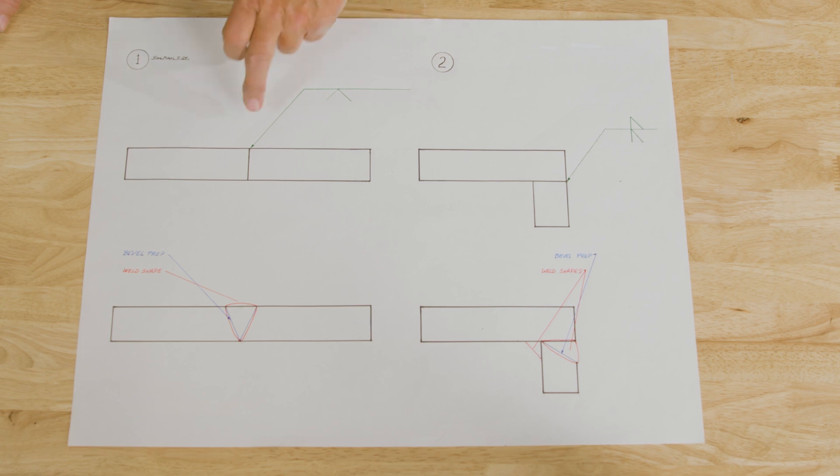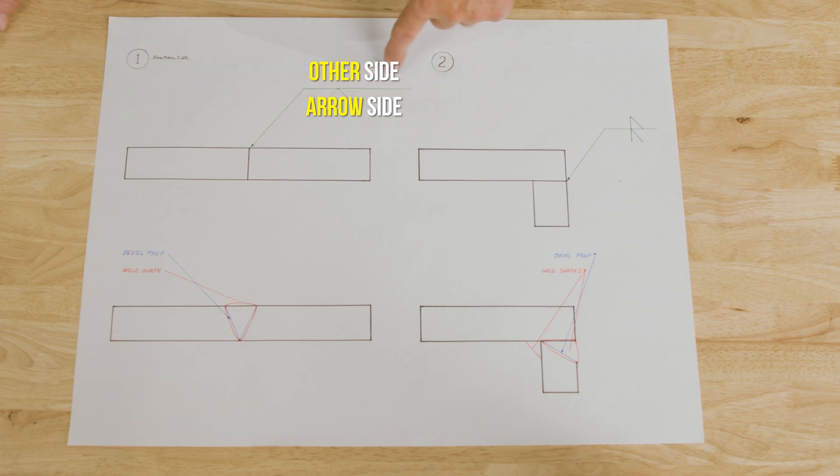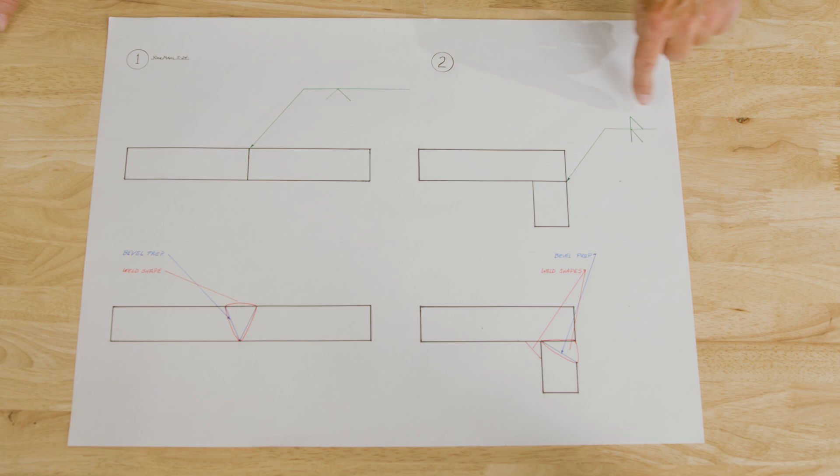You have to understand there is an other side and an arrow side. The arrow side is this part of it here. The other side is this part of it here. Same thing here. Arrow side's here, other side's here.